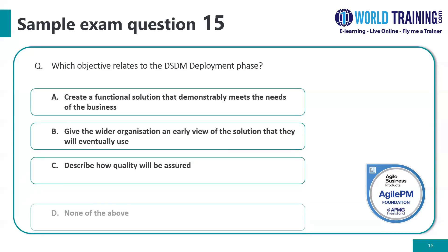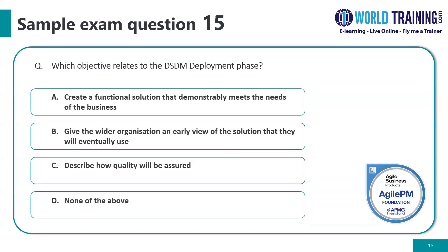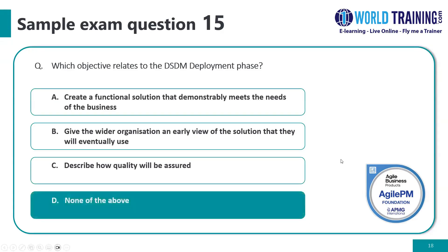Question number fifteen: which objective relates to the DSDM deployment phase? The correct answer is D: none of the above. A does not relate to the deployment phase — that normally happens as part of the evolutionary phase. B does not happen in deployment, and C also does not happen in deployment; rather, it happens in the foundation phase.